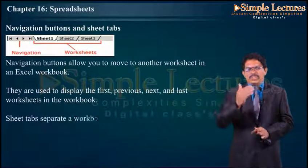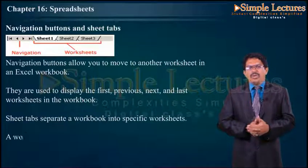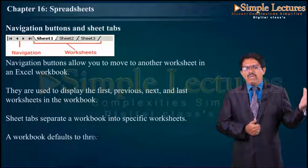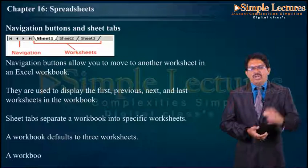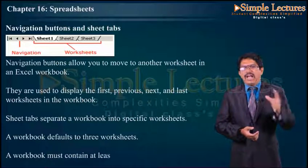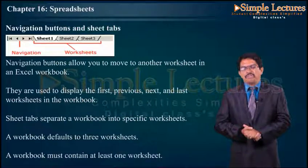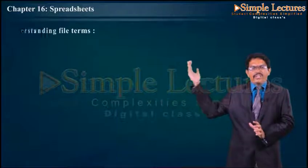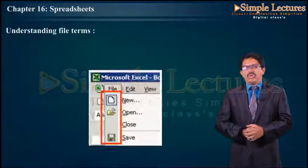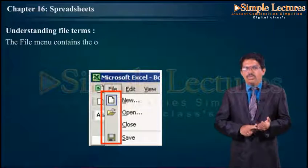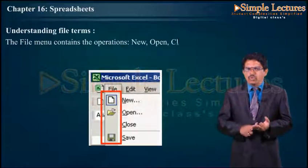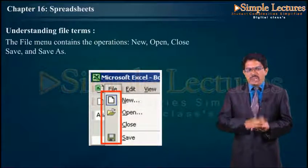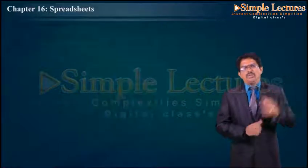A workbook defaults to three worksheets. A workbook must contain at least one worksheet. Now let's see how to understand file terms. The file menu consists of: New, Open, Close, Save, and Save As.